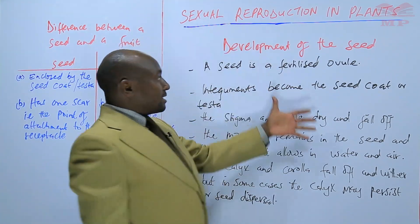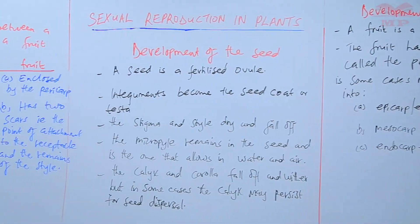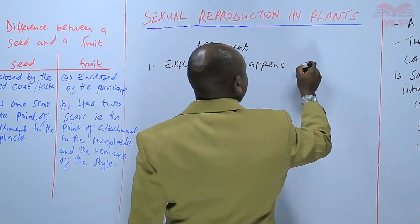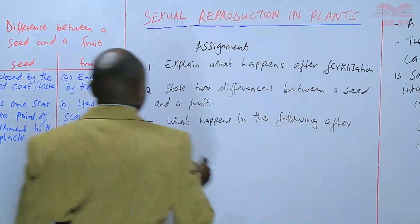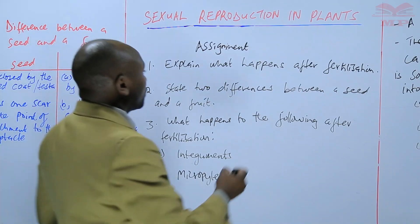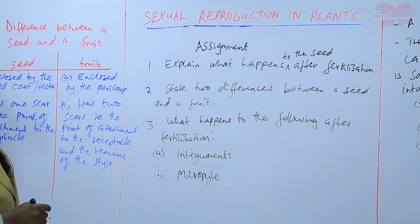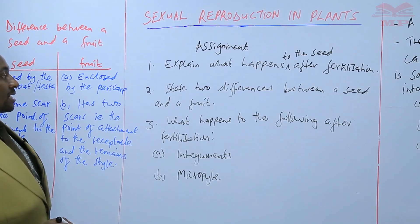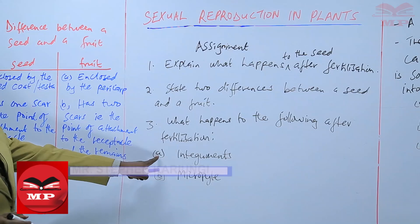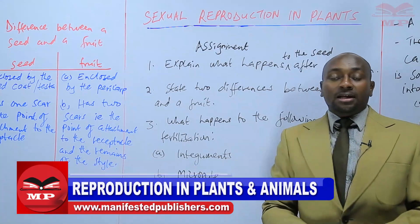We have looked at how the seed develops, how the fruit develops, and what is the difference between the two. We'll have a short assignment. Question one: explain what happens to the seeds after fertilization. Number two: state two differences between a seed and a fruit. Number three: what happens to the following after fertilization — integuments and micropyle? We are going to stop there. We meet next lesson. Goodbye.